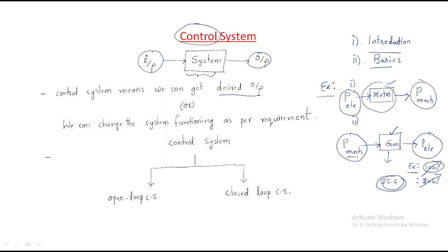That means we are controlling the input and controlling the output. If we want 20 watts instead of 10 watts, we need to work on the input supply as well. A normal system gives a general output, but a control system gives the desired or required output. We can also change the system functioning as per our requirement.